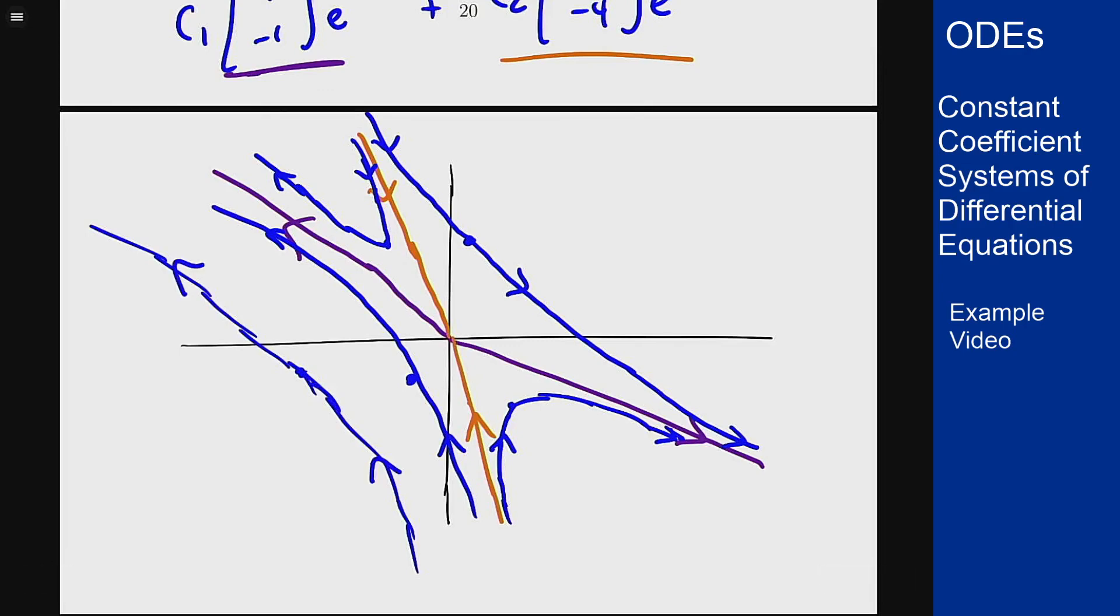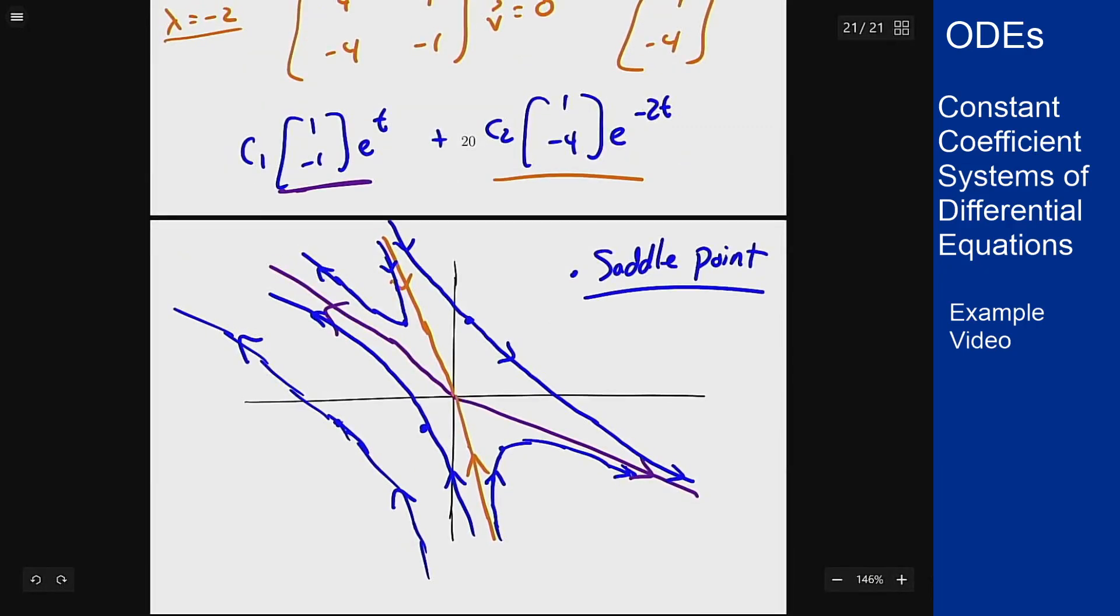That's the general way you get the phase portrait for this system. Again, because we have eigenvalues of opposite signs this is a saddle point. That's how you find the general solution for these problems by finding eigenvalues and eigenvectors, then use that to draw the phase portrait for constant coefficient homogeneous systems.